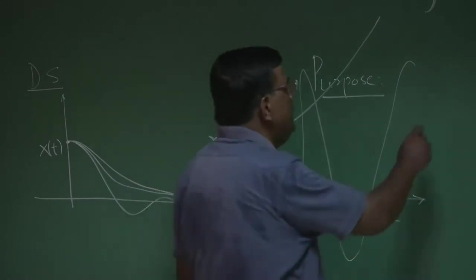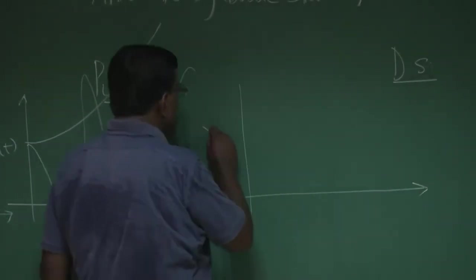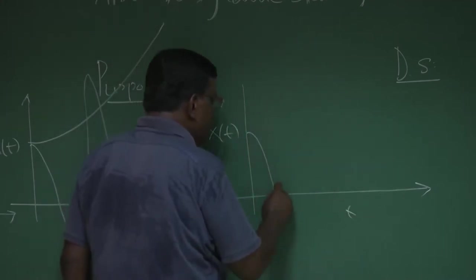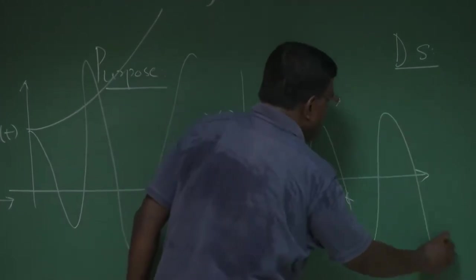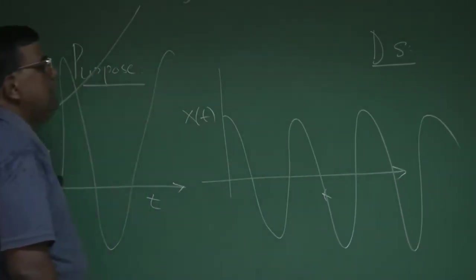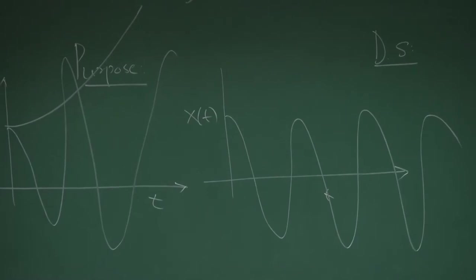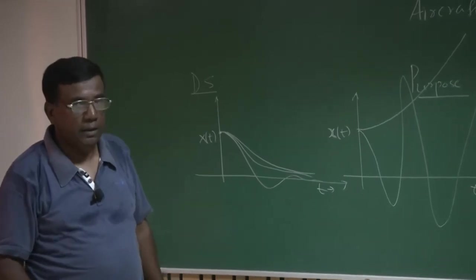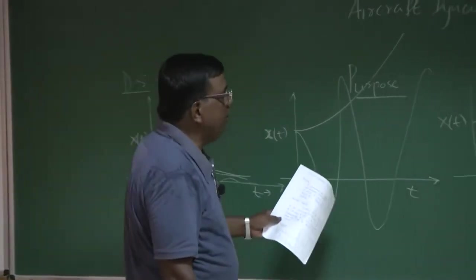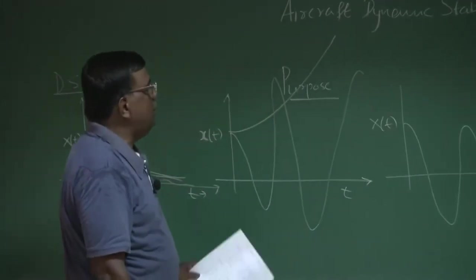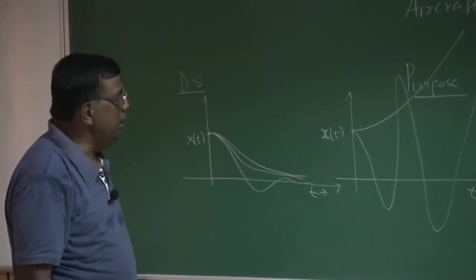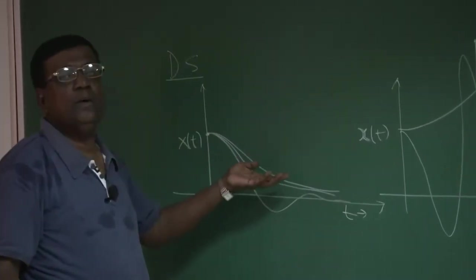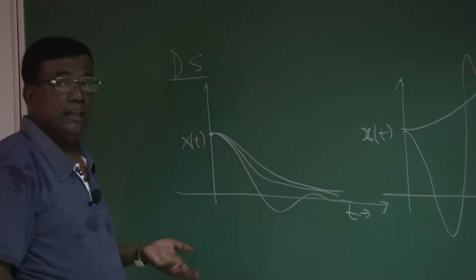There could also be a case where the disturbed quantity goes on oscillating continuously with time — that is a dynamically neutrally stable system. We will be discussing such cases. The response here is how x changes with time; that is the transient for our analysis.